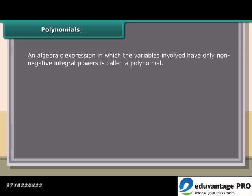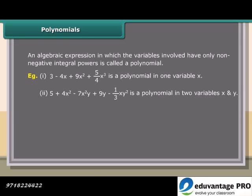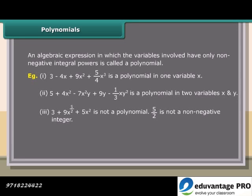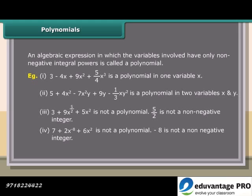An expression that involves variables having only non-negative integral powers is called a polynomial. Example 1: 3 minus 4x plus 9x² plus (5/4)x³ is a polynomial in one variable x. Example 2: 5 plus 4x² minus 7x²y plus 9y is a polynomial in two variables x and y. Example 3: 3 plus 9x^(5/2) plus 5x² is NOT a polynomial since 5/2 is not a non-negative integer. Example 4: 7 plus 2x^(−8) plus 6x² is NOT a polynomial since −8 is not a non-negative integer.